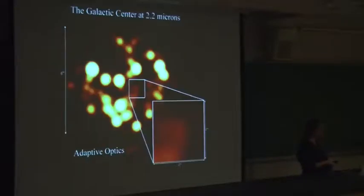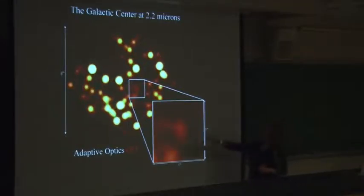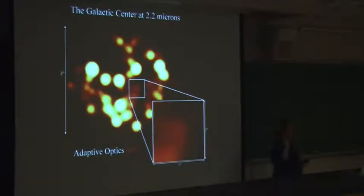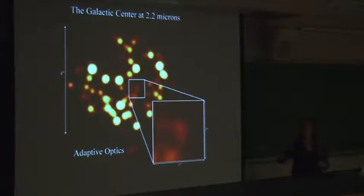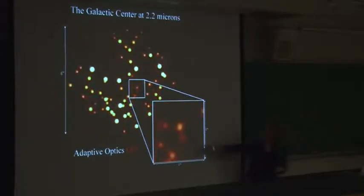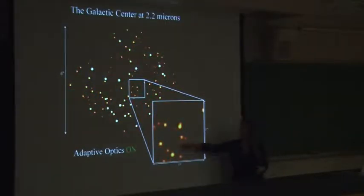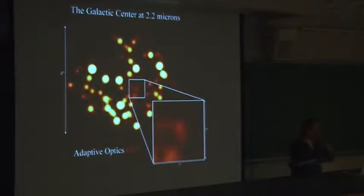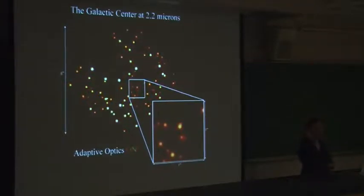If that's not convincing enough, here's the galactic center — the center of the Milky Way. You can see that not only are we doing a better job of resolving stars and separating them spatially from each other, but things that are too faint just sort of pop into existence. This is the technique we're using to recover really high spatial resolution observations of these nuclei with our adaptive optics.